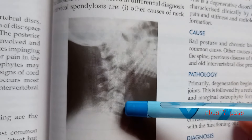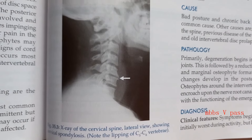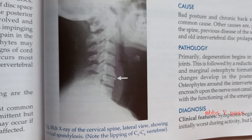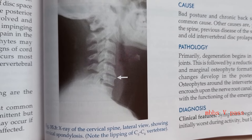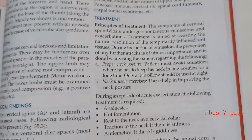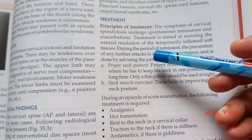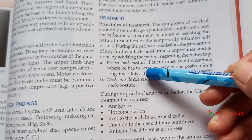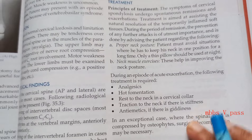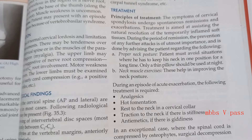What are they talking about here? Cervical spondylosis. Lipping of C5, C6. So what is the treatment you give for cervical spondylosis? Posture correction, neck muscle exercises, physiotherapy — that's what they are talking about here.